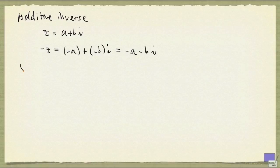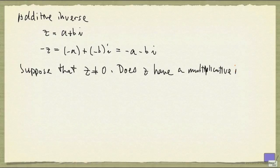Now the question is, what about multiplicative inverse? So suppose that z is not 0. Does z have a multiplicative inverse? Now before we answer this question, I want to point out that the set of complex numbers under addition and multiplication, as we have seen, actually form a field. So we should expect every non-zero complex number to have a multiplicative inverse. The question is, what is it?